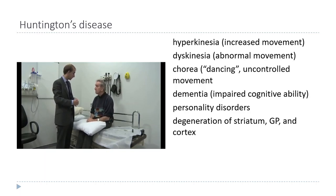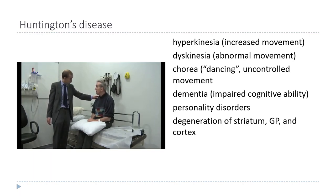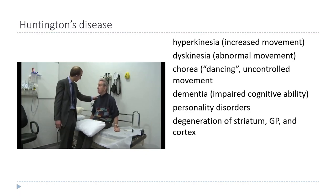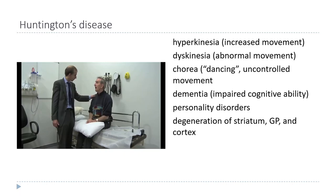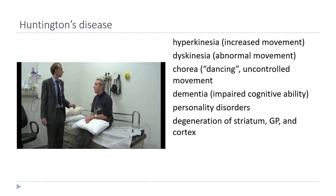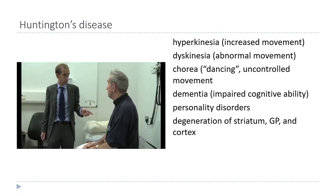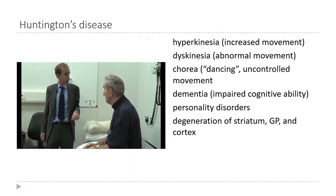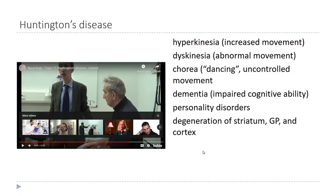Huntington's disease is different from Parkinson's and most other such diseases in that it is purely genetic — the cause is a dominant gene. If you have it, you have a 50% chance of passing it to your children, and it means one of your parents also had the disease. It is progressive but usually onsets late in life — you can go 50 or 60 years without any symptoms, and often not until well past the typical child-bearing age do you find out you have the disease.